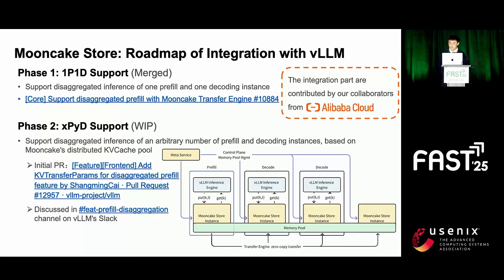I want to introduce our roadmap for integrating Mooncake Store into vLLM, planned in two stages. In the first stage, we use Mooncake's transfer engine for vLLM's disaggregated inference, which currently supports one prefill instance and one decoding instance — this part has already been merged into vLLM, and you can refer to our repository for the tutorial. In the second stage, we will support disaggregated inference with any number of prefill and decoding instances, based on Mooncake's distributed KV cache pool and a central scheduling service.